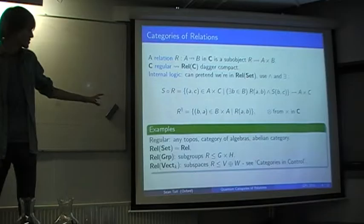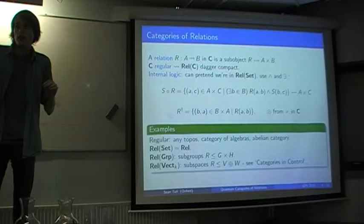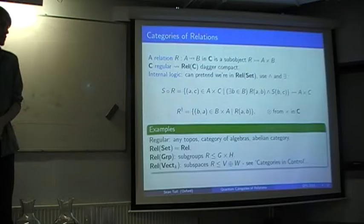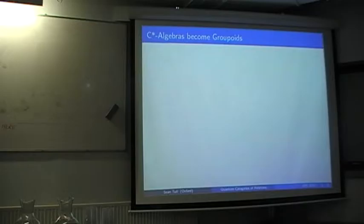These are the three main examples we use. When we put sets in, we get the usual REL we've heard about. When we put groups in, our relations from G to H are now subgroups of G times H. And when we put vector spaces in, we get the linear relations we've heard about. These have come up recently in control theory — we heard about that from Powell in the workshop on Monday and Tuesday, and also from John Baez and Jason Erbele, who will be talking about this after lunch.